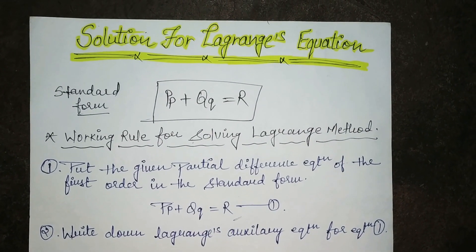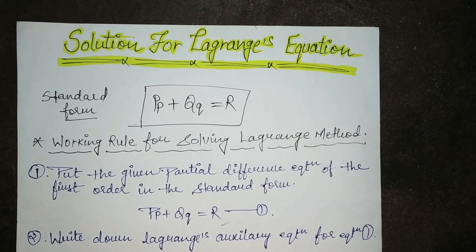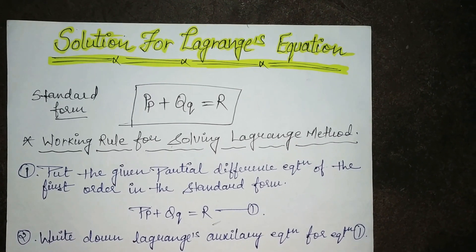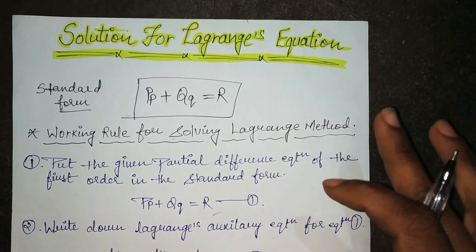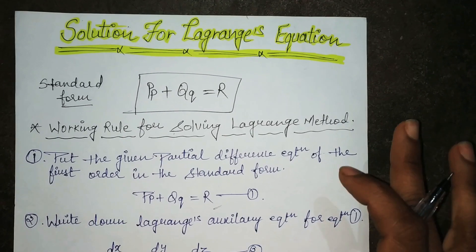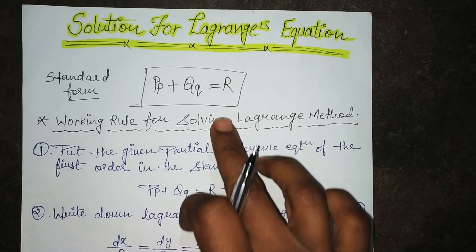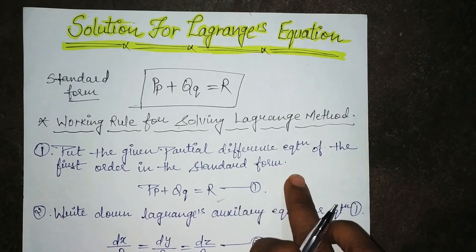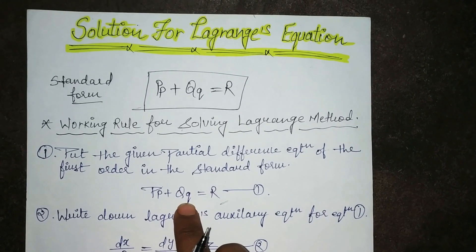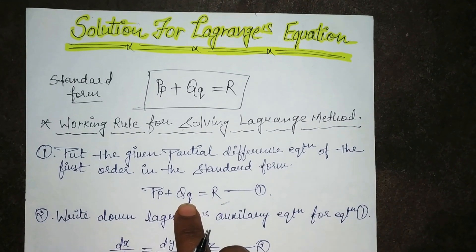Now we see the solution for the Lagrange equation. This is the name of the method, and this is the standard form. This is the first condition — this is the format of your equation or the format of your question.